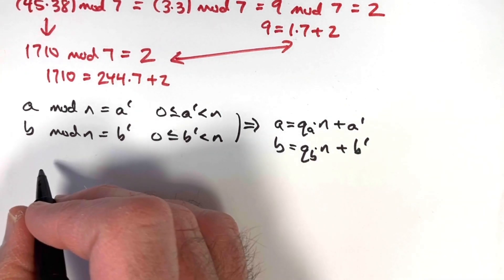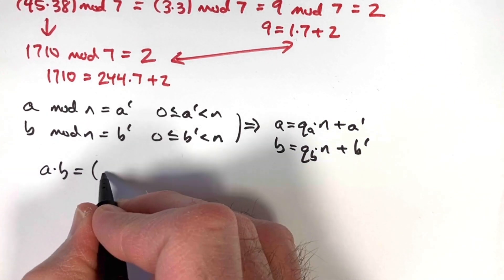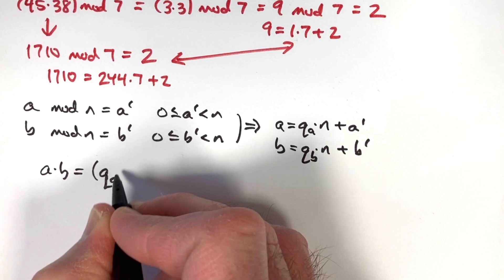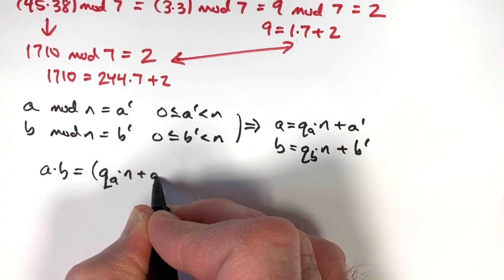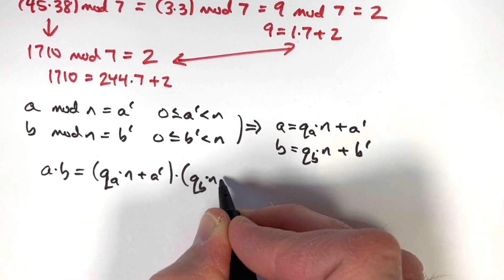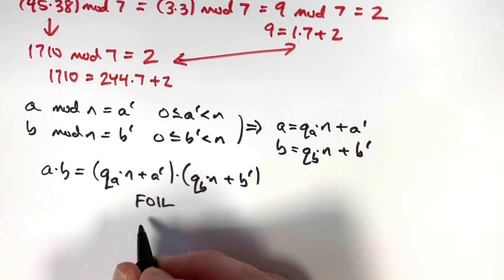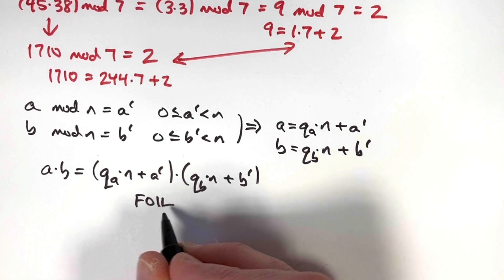Now compute a times b. Go ahead and use these expressions. I'm not modding yet. I'm just doing a regular multiplication. If you're going to go ahead and multiply these things, you will need to use the so-called FOIL method. First times first, outside times outside, inside times inside, and last times last.